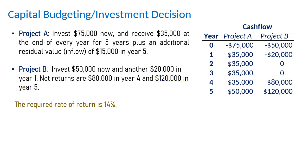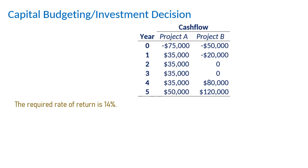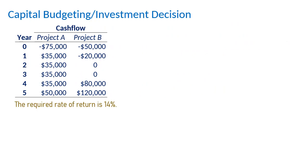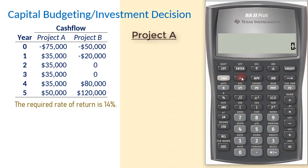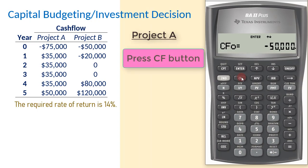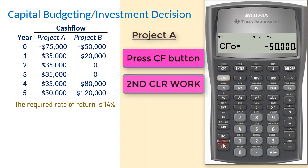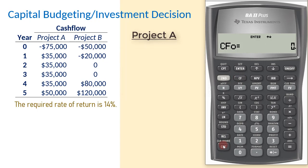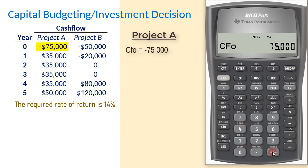Let's use the BA2 Plus Calculator to determine the net present value for each project, starting with Project A. Press the CF Cash Flow button, then press 2nd Clear Work to clear previously done work. CF0 represents immediate cash flow, so we enter that as negative $75,000 and press Enter.